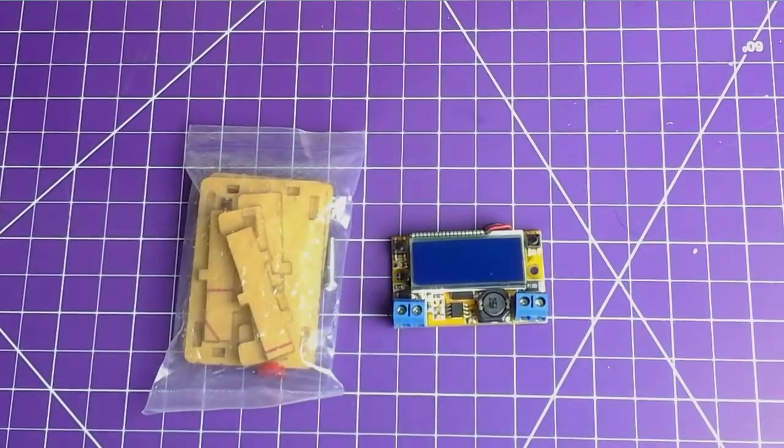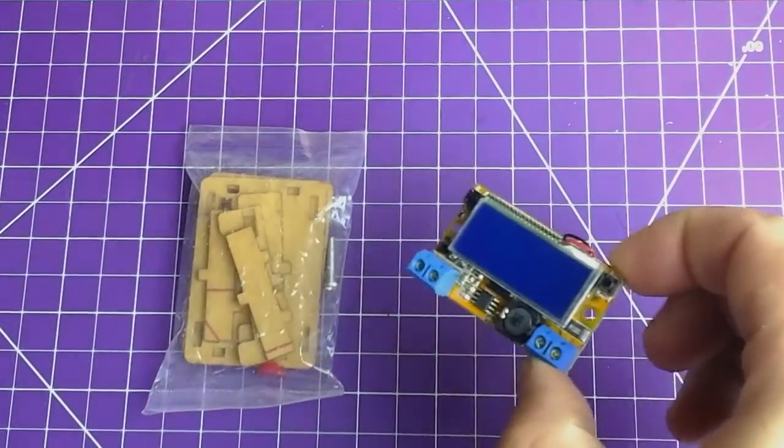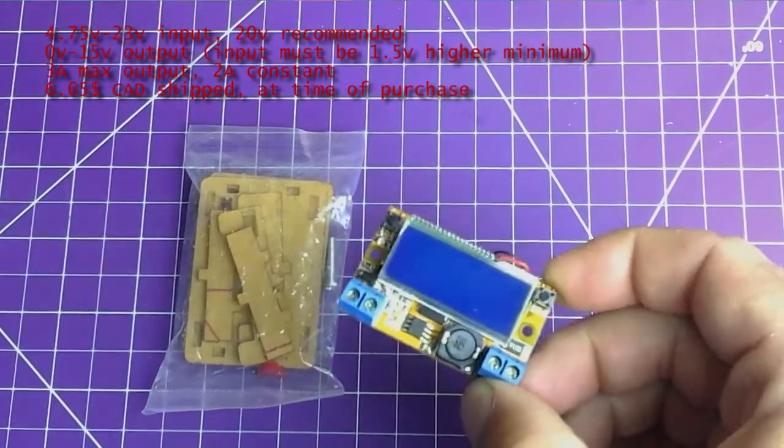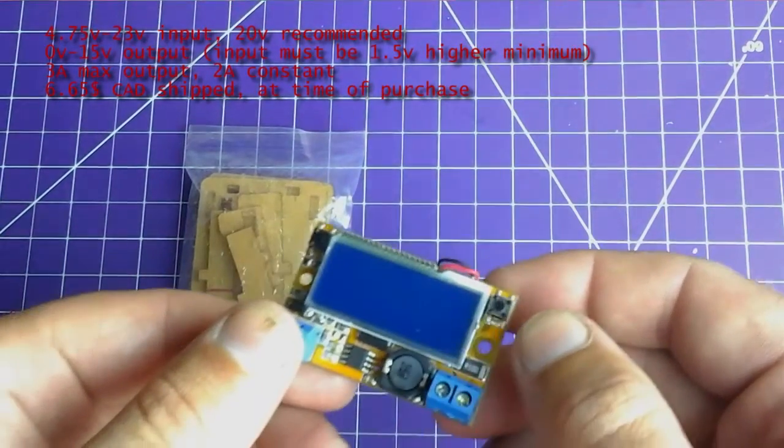Hello and welcome back to The Bench. Today I'm looking at this little DC to DC step-down converter with LCD display. And what's nice about this is it'll display voltage and amperage on the LCD.